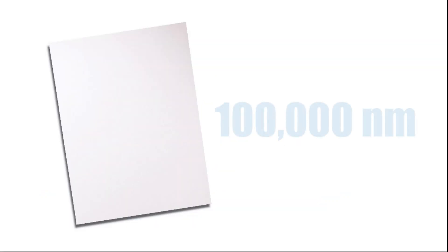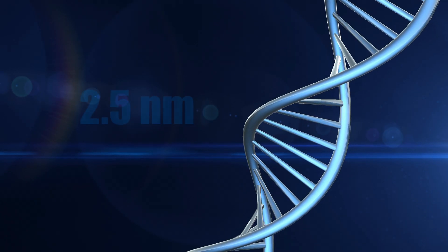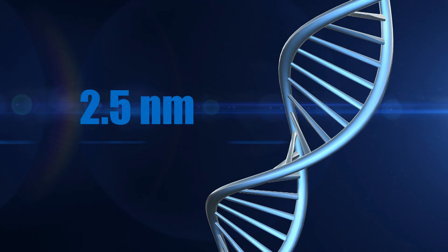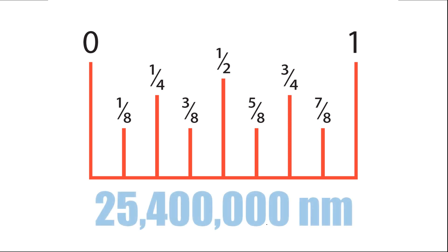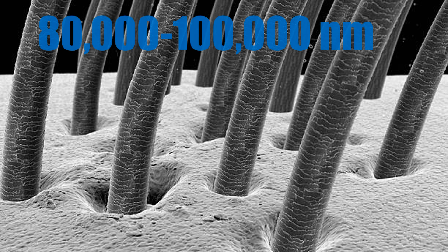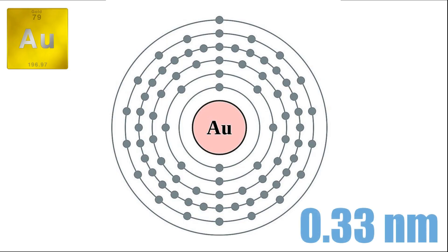To understand this proportion, let's give some examples. A sheet of paper is around 100,000 nanometers thick. A human DNA strand is about 2.5 nanometers in diameter. There are 25,400,000 nanometers in an inch. A human hair is between 80,000 and 100,000 nanometers thick. A gold atom is one-third of a nanometer in diameter.